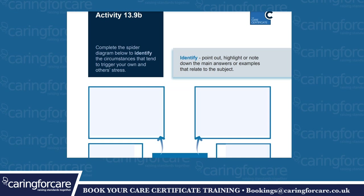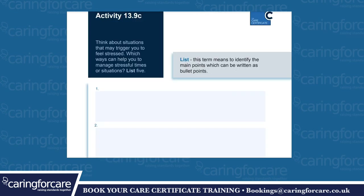Activity 13.9b: identify — point out, highlight or note down the main answers or examples that relate to the subject. Complete the spider diagram below to identify the circumstances that tend to trigger your own or other stress triggers. Activity 13.9c: think about situations that may trigger you to feel stressed. Which ways can help you to manage stressful times or situations? List 5. To list means to identify the main points that can be written as bullet points.